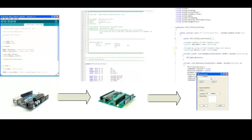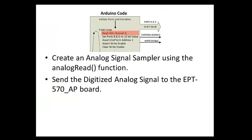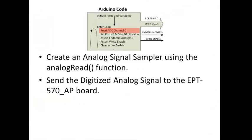Let's start writing the analog monitor code. We'll start with the Arduino analog monitor code. The first order of business is to lay out the design. We want to create a simple analog signal sampler using the analog read function, send the sampled analog data to the EPT570 board using the address and a write enable signal, then repeat this block of code for each channel.